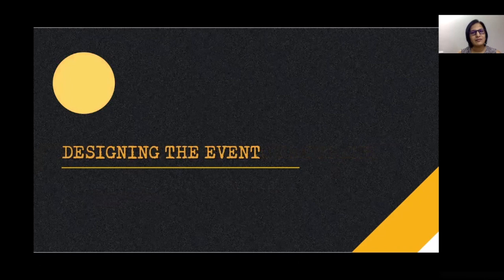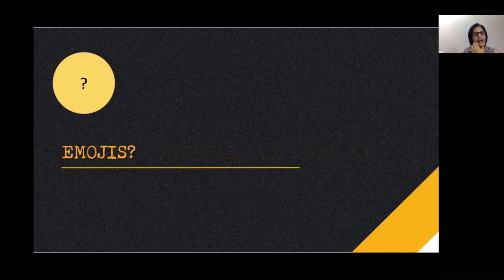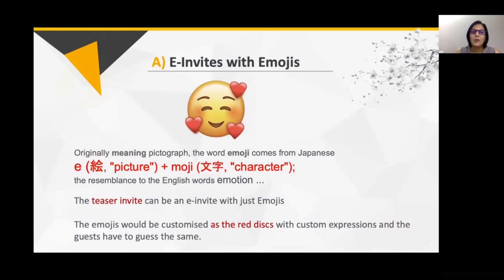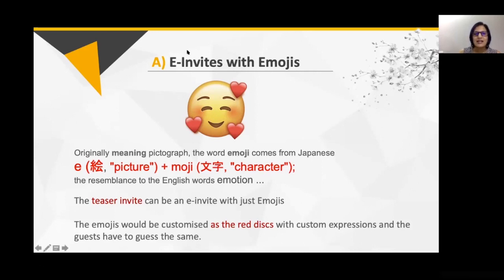Now I'll tell you how we designed the entire event. Do you know what emojis are? Emojis are a word meaning 'pictograph' — in Japanese, it means a picture and a character. Emojis were actually invented by Japan, and we use them a lot in WhatsApp and social media. So what we suggested was to have e-invitations or email invitations with emojis, with a Japanese connection.